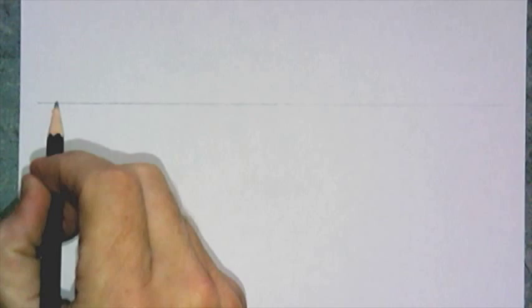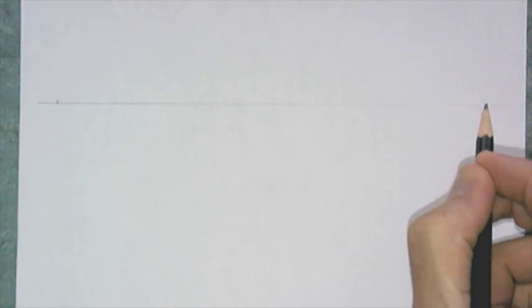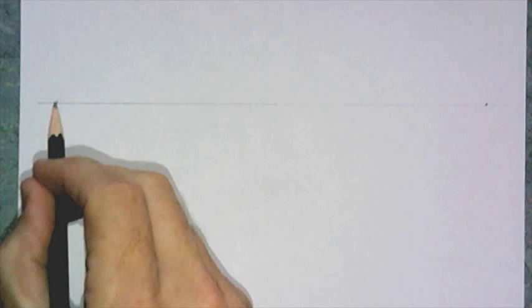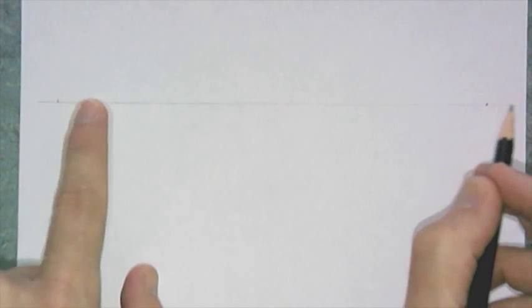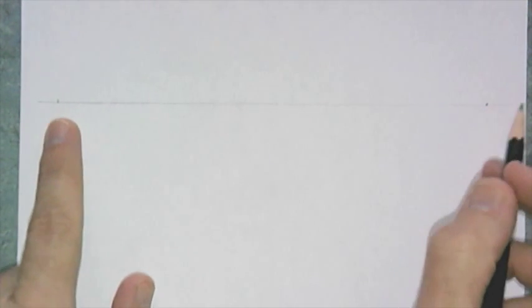What we're going to do is put two vanishing points, one, two, and not put them close to each other. Put them as far on the edge of the paper as you can be. One, two, like this.